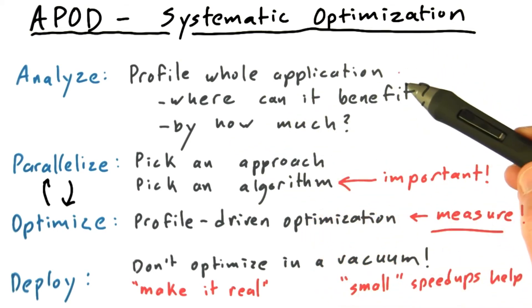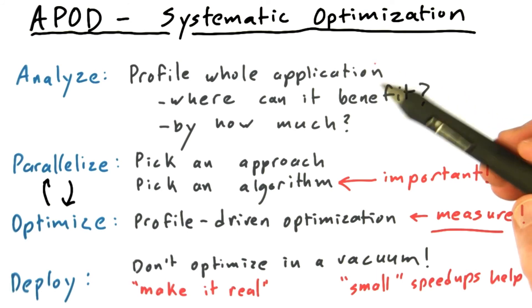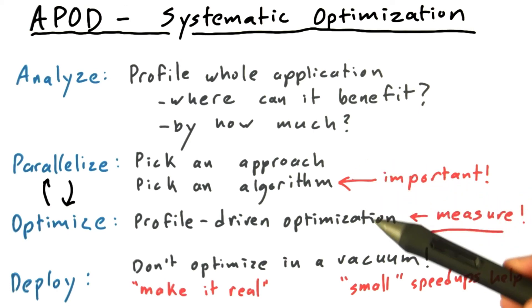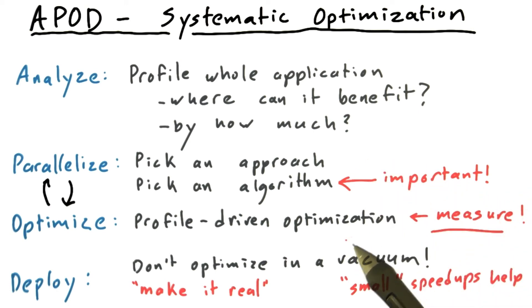Really, the advice here is be disciplined. Analyze what you're doing. Decide how you're going to parallelize it. Decide how you're going to optimize it by studying that code and measuring it using profile-driven optimization. Finally, be sure to deploy frequently. Deploy early and often. Remember that this whole thing is intended to be a cycle.